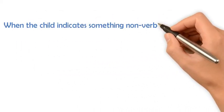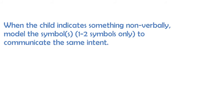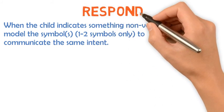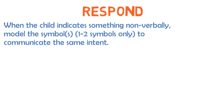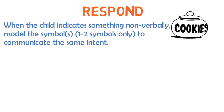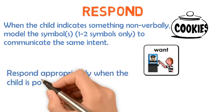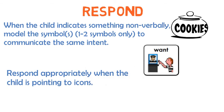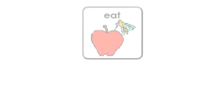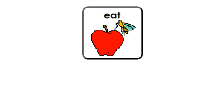When the child indicates something non-verbally, the communication partner should respond and model the symbols to communicate the same intent. For example, when the child looks at the cookie jar, you could say 'cookie' or model 'want + cookie' on the child's communication system. Respond appropriately when the child is pointing to the icons — they are exploring, so provide them with the word as well as the context for that word. For example, if a child points to the eat icon, you might say 'you are hungry, you want to eat' while pointing to the eat icon on the display.